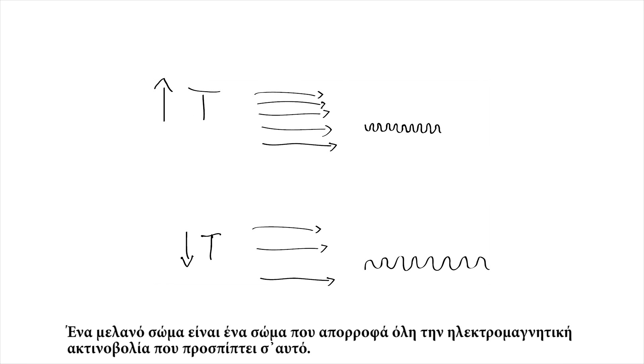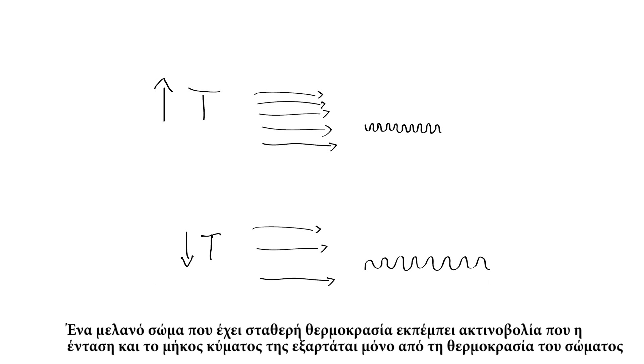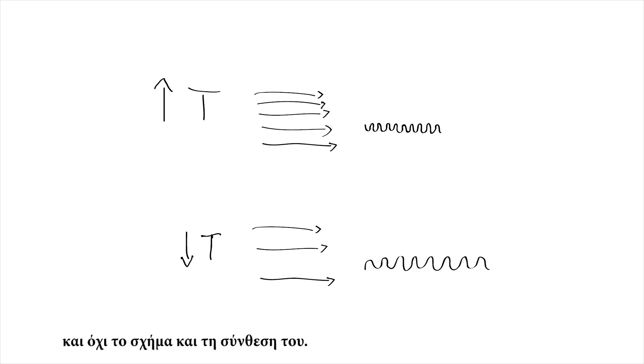A black body is a body that absorbs all incident electromagnetic radiation. A black body that has a constant temperature emits radiation that its intensity and wavelength depends only on the body's temperature and not its shape and composition.